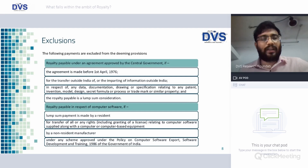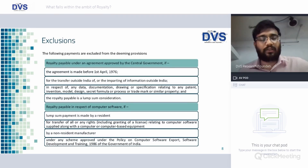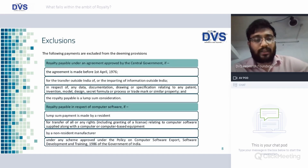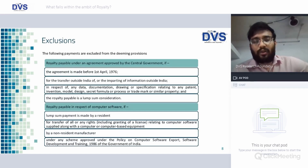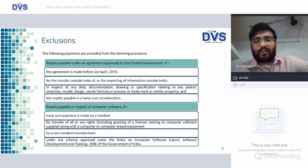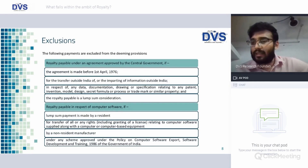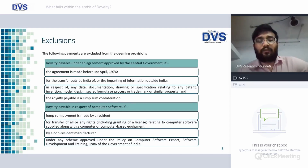Exclusions: royalty payable under an agreement approved by the Central Government, if the agreement is made before 1st April 1976, for the transfer outside India or for imparting of information outside India in respect of any data, documentation, drawing, or specification relating to any know-how, patents — and the royalty payable is a lump sum. If these conditions are satisfied, it will not fall within the ambit of royalty and thus would not be taxable in India.